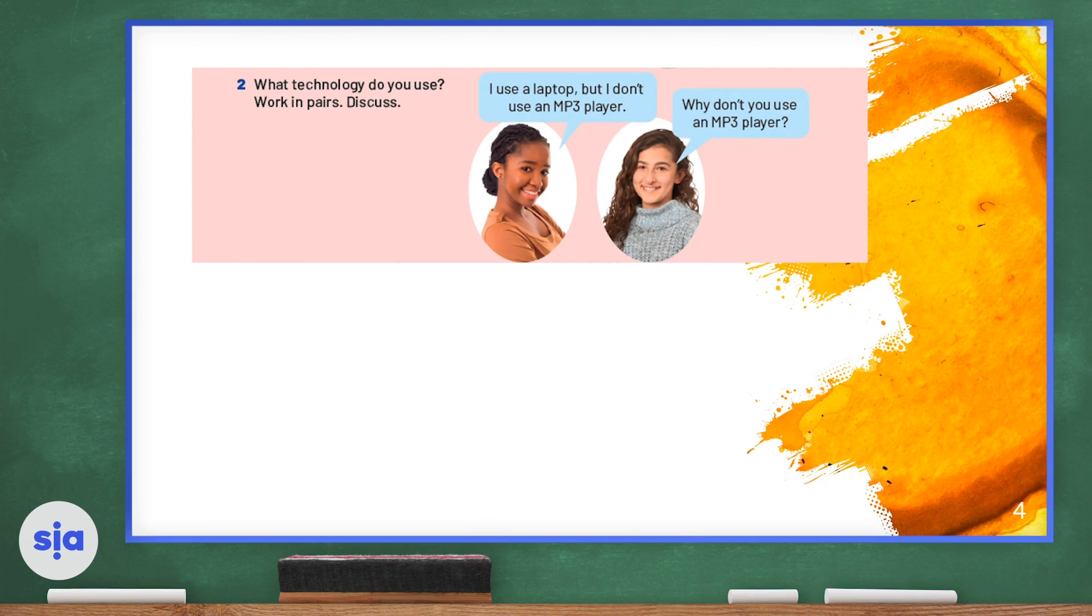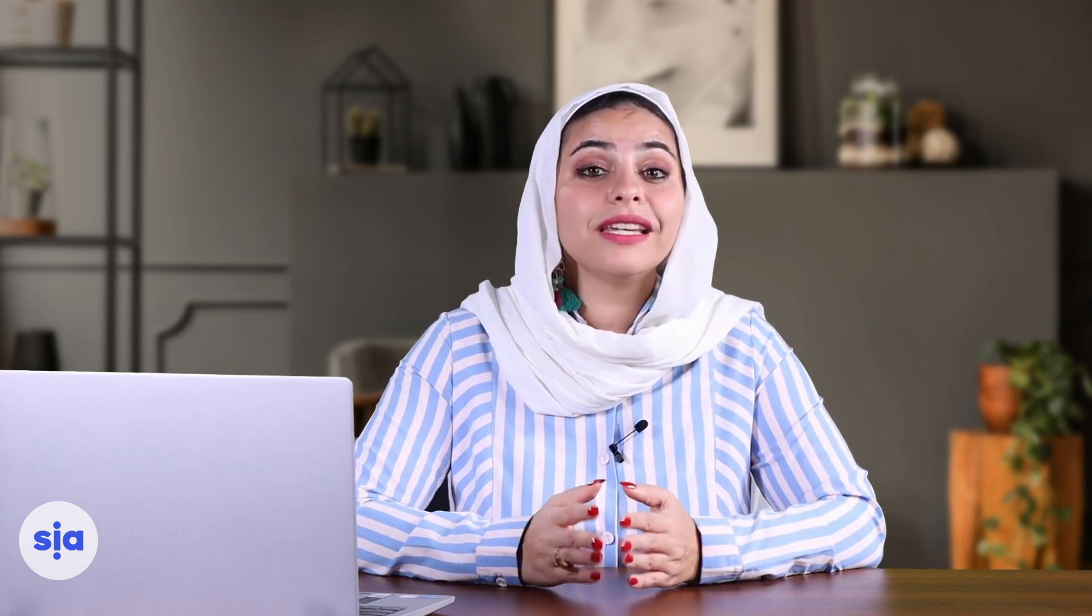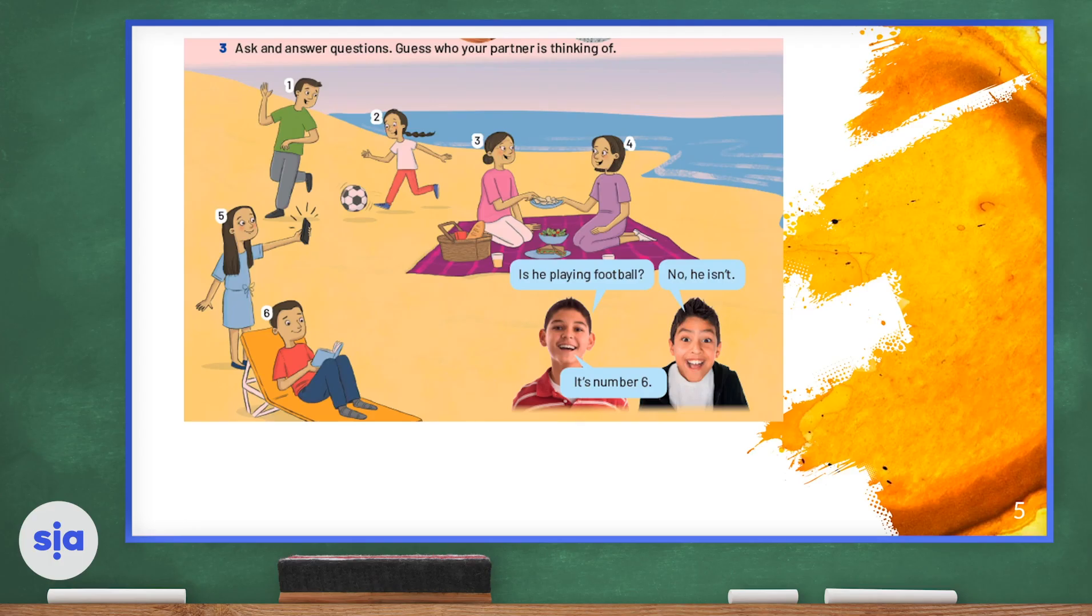Now I'd like you to tell me what technology do you use. Think about the kind of technology you use the most and work with a partner to discuss. Let's read the speech bubbles together: 'I use a laptop, but I don't use an MP3 player.' 'Why don't you use an MP3 player?' So for example, I use my laptop the most along with my mobile phone. I never use a tablet. What do you use? Discuss with your partner.